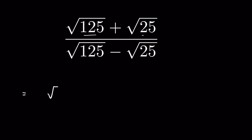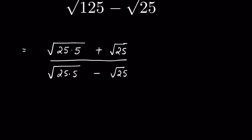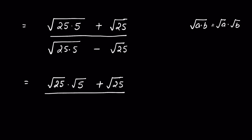125 can be written as 25 times 5. So we have square root of 25 times 5, plus square root of 25, upon square root of 25 times 5, minus square root of 25. Since square root of a times b equals square root of a times square root of b, we can write square root of 25 times square root of 5, plus square root of 25, upon square root of 25 times square root of 5, minus square root of 25.